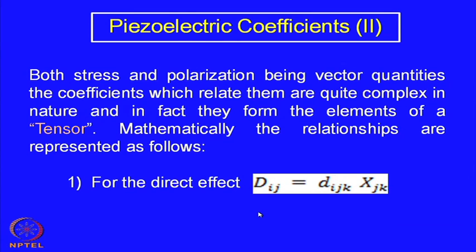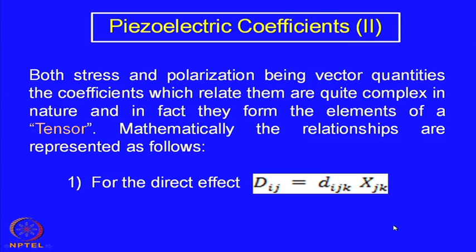Mathematically, the relationships are represented as follows. For the direct effect, D_i = d_ijk · X_jk, where d_ijk is the coefficient and X_jk is the stress pattern. The stress is applied in one particular direction and the flux density or voltage may appear in different directions. That is why we have the subscripts i, j, k.